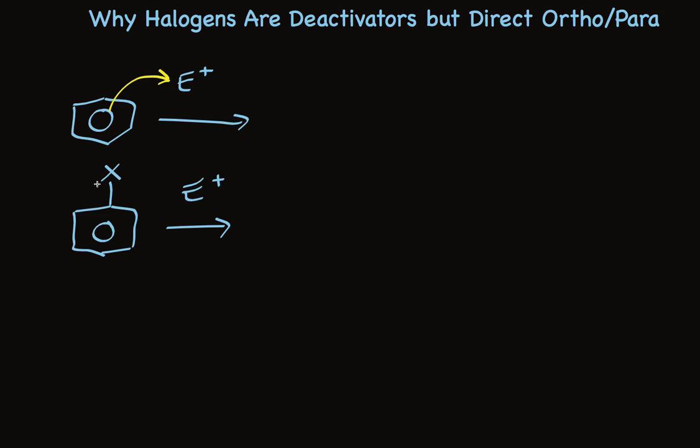These electrons are drawn to the electrophile. Halogens are electron withdrawing, so they pull electron density from the pi system. So this first step of the reaction is slower, because there's less electron density to pull the electrophile toward it.